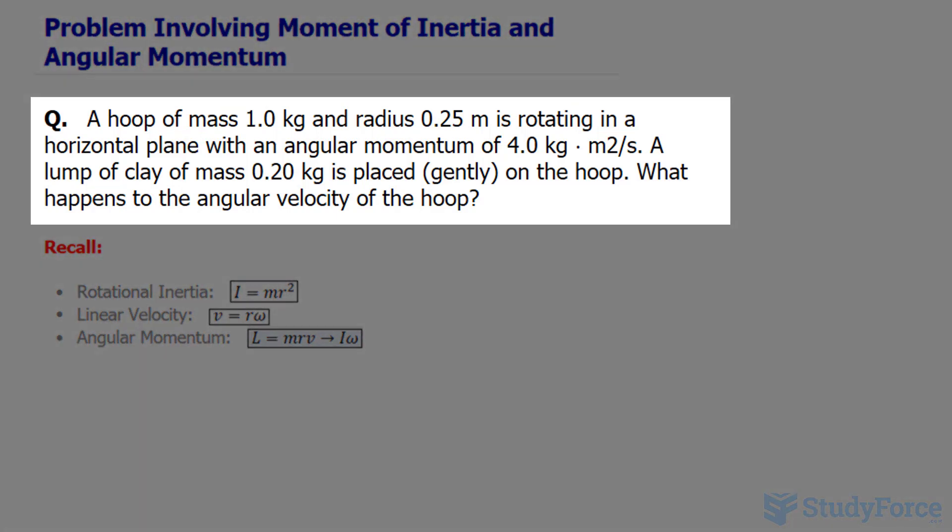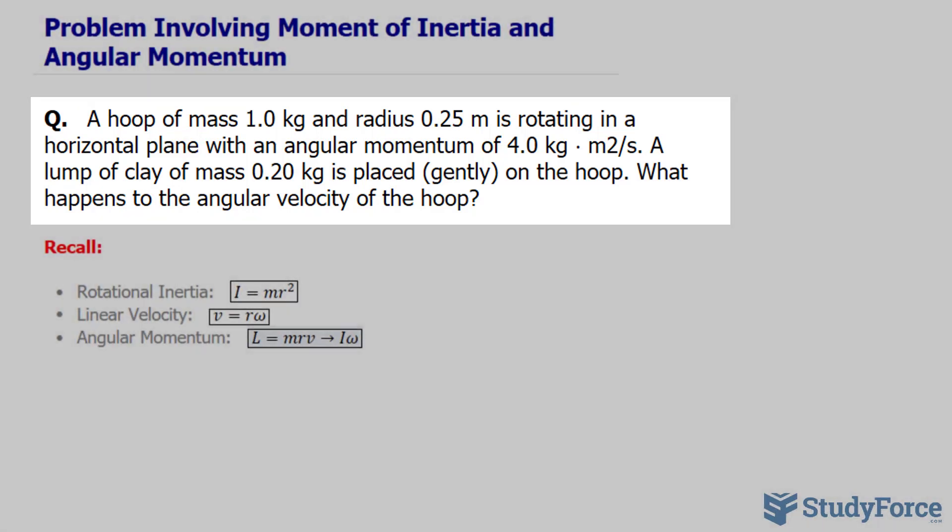The question reads: a hoop of mass 1.0 kilograms and radius 0.25 meters is rotating in a horizontal plane with an angular momentum of 4.0 kilograms meters squared per second. A lump of clay of mass 0.20 kilograms is placed gently on the hoop. What happens to the angular velocity of the hoop?